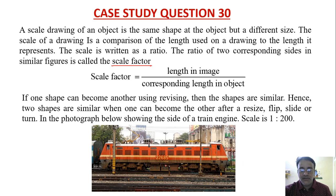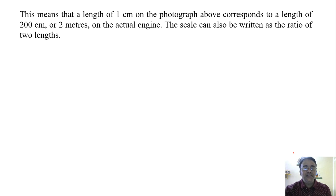In this photograph the side of a train engine is shown and the scale factor is given as 1 is to 200, means for 1 centimeter, 200 centimeter length or actual length will be there. This means the length of 1 centimeter on the photograph above corresponds to a length of 200 centimeter, that is 2 meter on the actual engine. The scale can also be written as the ratio of two lengths.